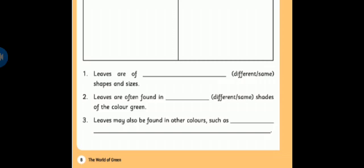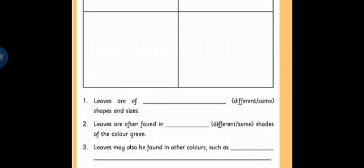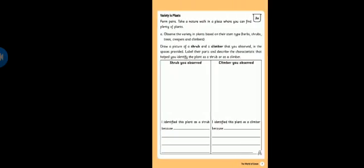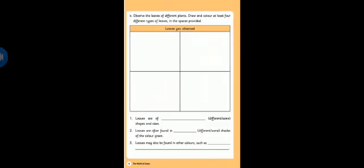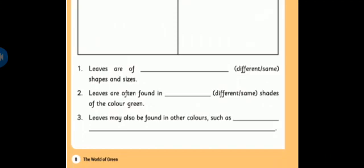Second one: leaves are often found in different or same shades of the color green. And third one: leaves may also be found in other colors such as — fill in the blank. Based on your observation, you have to give answers for these three questions. So: draw one shrub, one climber, write the characteristics, then draw four different types of leaves, and based on your observation complete those questions.